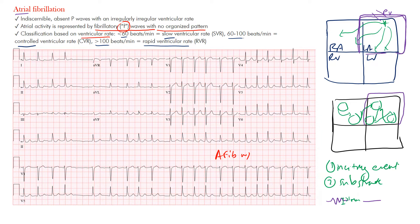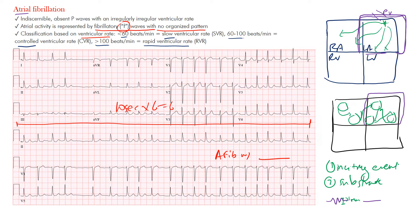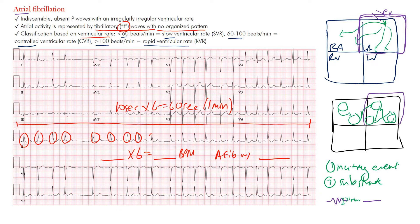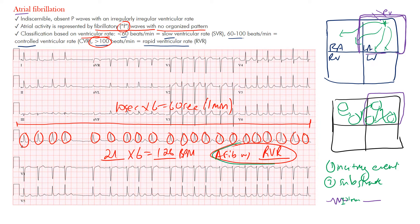We know atrial fibrillation is present — now let's determine the ventricular rate. From beginning to end is 10 seconds on a standard 12-lead EKG, and 10 seconds times 6 equals 60 seconds. Count the number of QRS complexes and multiply by 6. Counting: 1 through 21 complexes. 21 times 6 is 126 — that's over 100 beats per minute. So this is atrial fibrillation with rapid ventricular response, AFib with RVR.